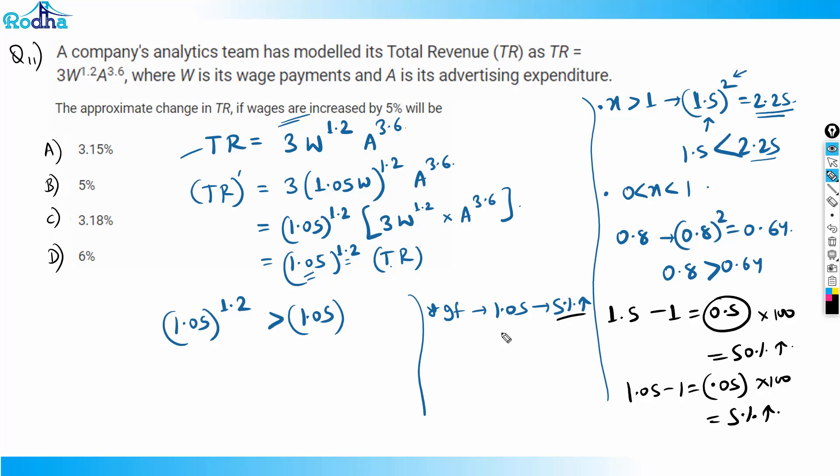And if it is 1.05 to the power 1.2, the increase will be greater than 5 percent. So if increase is greater than 5 percent, I have only option D, that's it. The 6 percent is the answer. We don't need to calculate also. I hope all of you got this.